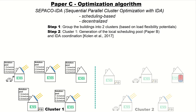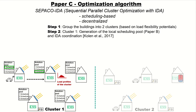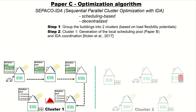How does the IDA coordination work? Initially the first building randomly selects one of its schedules, then updates the load profiles of the whole cluster and sends them to the next building. The next building iterates through all its schedules and selects the one that is optimal for the whole cluster, updates the resulting load profiles by adding its individual profiles, and sends them to the next building. This continues — each building iterates through all possible schedules, selects the optimal one for the whole cluster, updates the load profiles, and passes them on — until every building has selected one schedule.